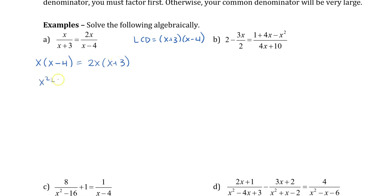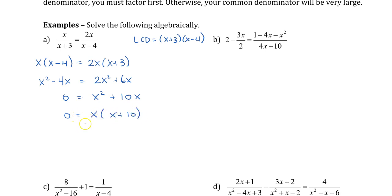Let's distribute. So x² - 4x = 2x² + 6x. Moving everything to one side and factoring, I factor out the x and get x(x+10) = 0. So I have two solutions: x = 0 from the first factor, and x = -10 from the second. My non-permissible values are -3 and 4, and those weren't my solutions, so both solutions work — you can plug them in to verify.